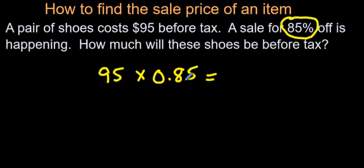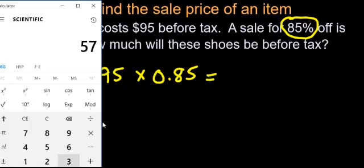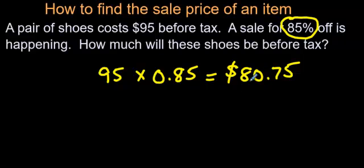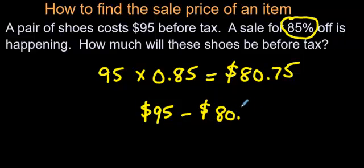If you do that on your calculator, or move it over two places to the left, 95 times 0.85 is $80.75. Wow. That is your discount. So, what do you do with these numbers again? Remember, that's not the price of the shoes. That is the discount of the shoe. So, we're going to go $95 minus, not plus, $80.75.